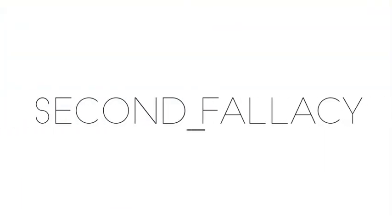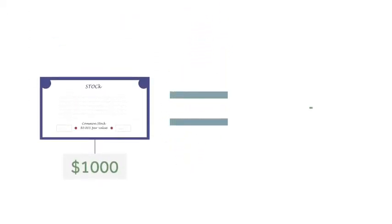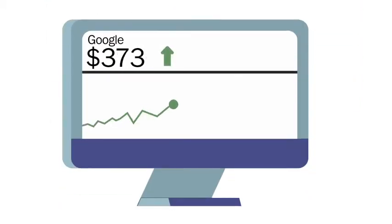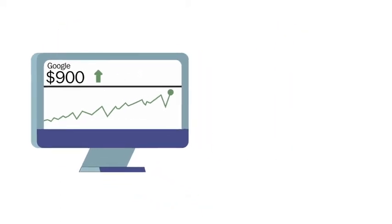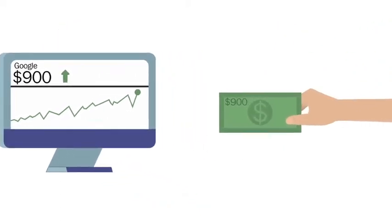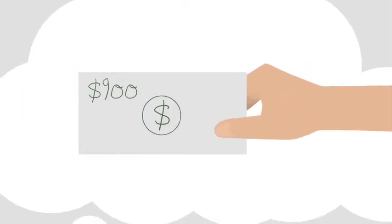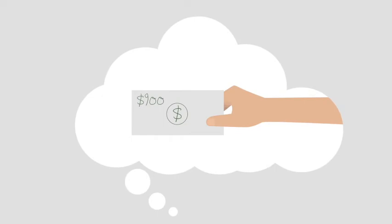The second fallacy, which is a product of the first fallacy, is the idea that the asset value of a stock is the same thing as cash. When people see a share of Google that is trading at $900, they will just assume that is $900 in real money. But the value of a stock is just an idea. It is just a thought, something completely imaginary, which is why the price can rise and fall sharply at any given moment.